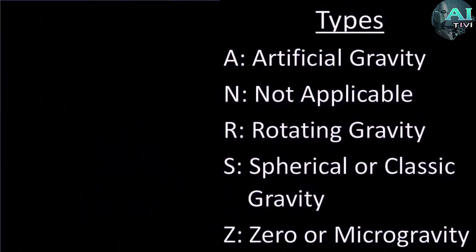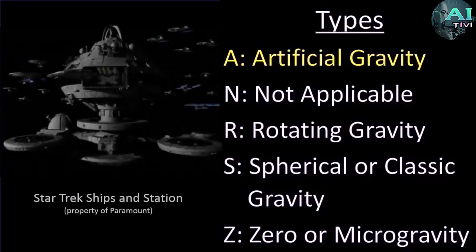So let's go ahead and move into our classification system. First type is types. We have artificial gravity, situations where it's not applicable, rotational gravity, spherical or classical gravity, and zero or microgravity.